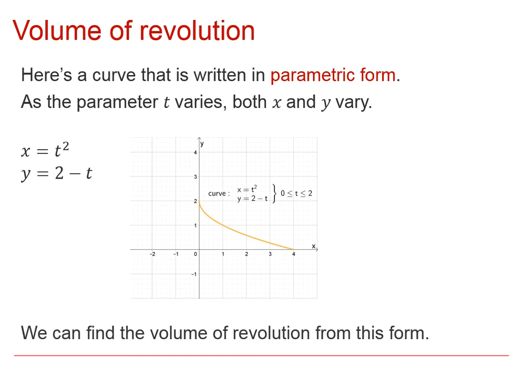But here we have a curve written in terms of the parameter T. So as T varies, both X and Y vary, and this is the curve here. Now we can find the volume of revolution for this. We have a couple of options.